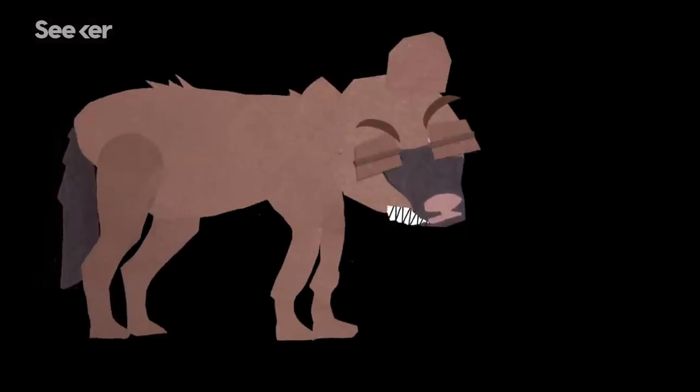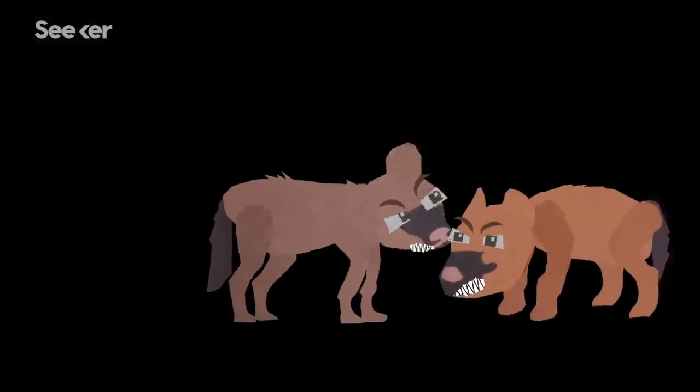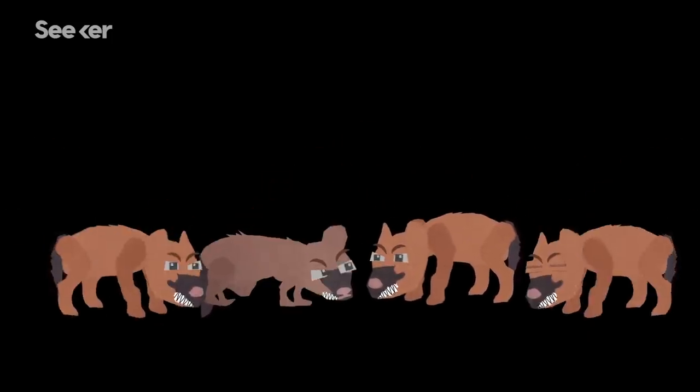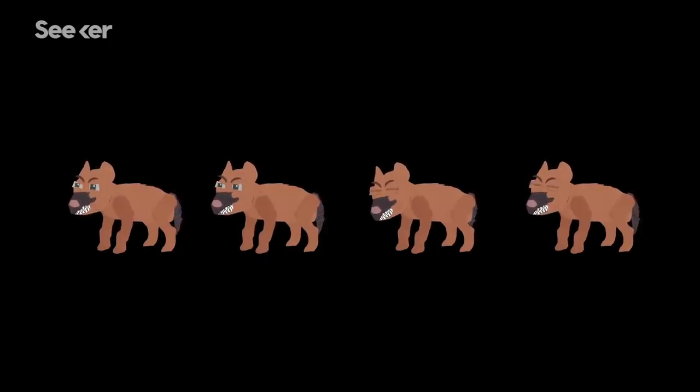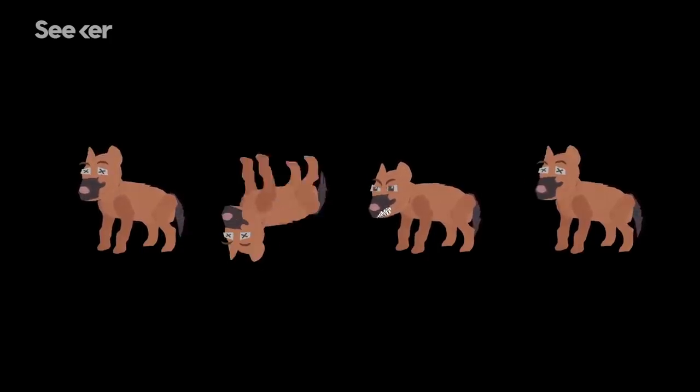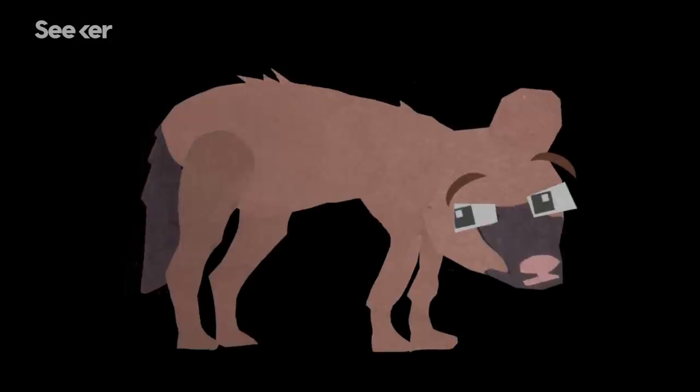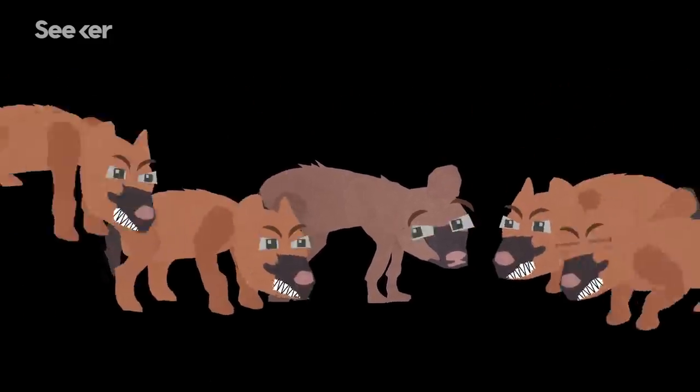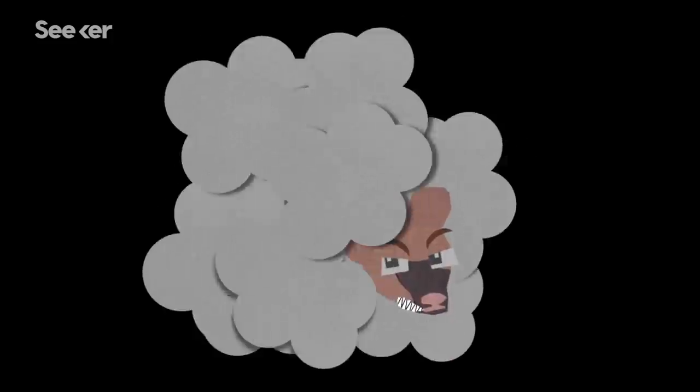Baby hyenas have strong jaws and sharp teeth. Siblicide is common, especially on female cubs. Females stand to climb higher on the social ladder without sisters around. And males? Well, males would do better if they had no sisters at all. So they've evolved to be physically identical to each other so that they do not specifically target the females in acts of siblicide.